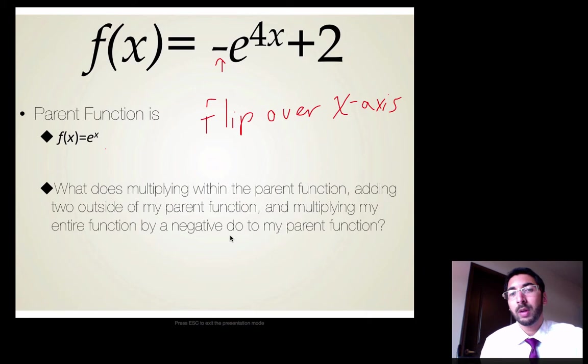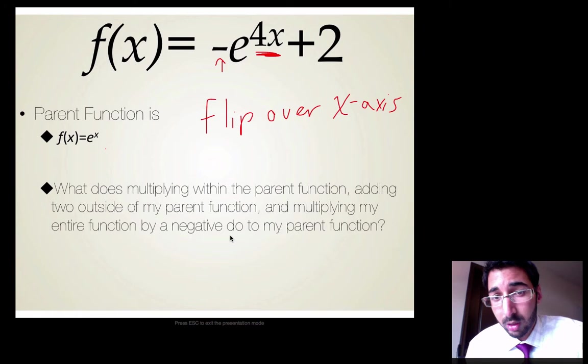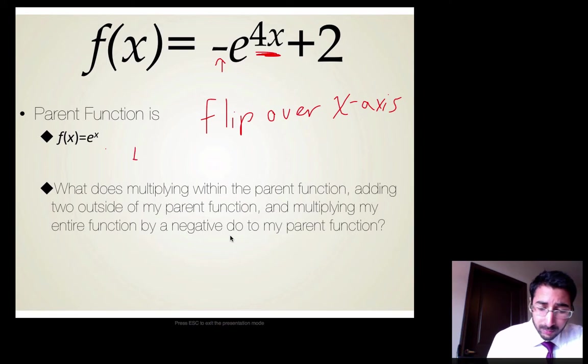I'm going to continue moving on. I'm going to see what else happens in this graph. Well, my parent function is E to the x. Notice up here I have a 4x. So that x is being multiplied by a 4. I notice that my 4 is being multiplied directly within my parent function. Now, if it's directly within my parent function, that means it's the first thing I'm going to perform. It's the first operation I'm going to perform on my variable. That means if we look back at the flow chart from the last unit, that's a horizontal transformation.